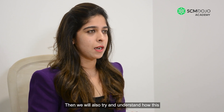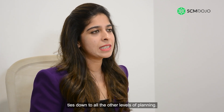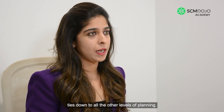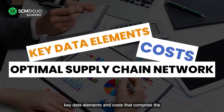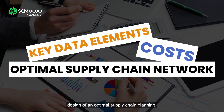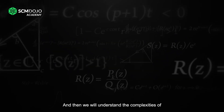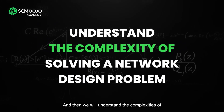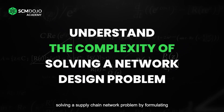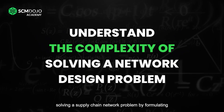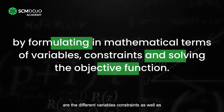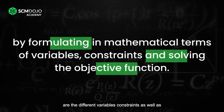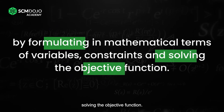We will also try and understand how this ties down to all the other levels of planning. Next, we will look into some of the key data elements and costs that comprise the design of an optimal supply chain. And then we will understand the complexities of solving the supply chain network problem by formulating it in mathematical terms — understanding the different variables, constraints, as well as solving the objective function.